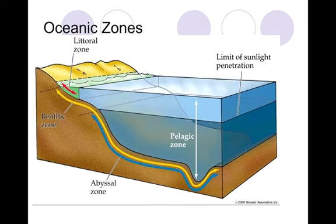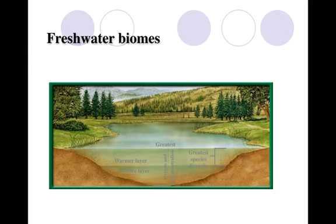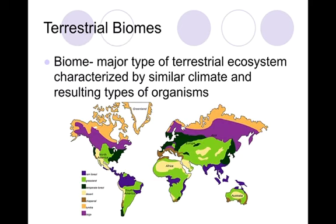Here's a picture of our zones after we talked about them, and here's our freshwater biome. Please notice that the greatest species diversity on our picture is up near the shoreline, close to the edge where the continental shelf is still there. The next type of biomes we're going to talk about are our terrestrial biomes — terrestrial means land. These are areas on the continents characterized by similar climates, and thus resulting in similar types of organisms, because it is the climate that is going to dictate what types of organisms are going to be able to survive there.